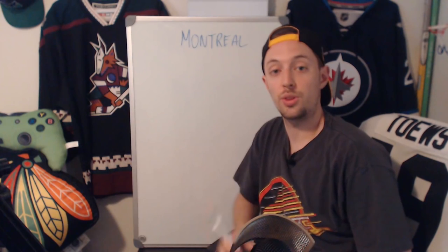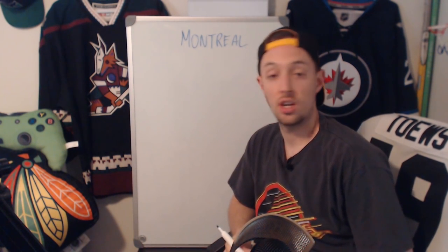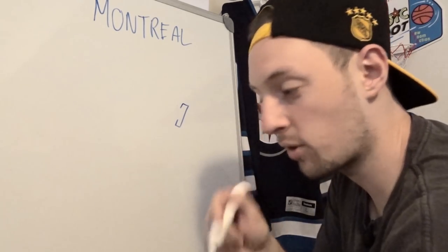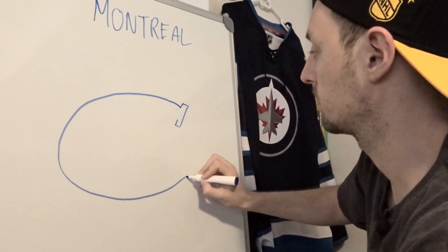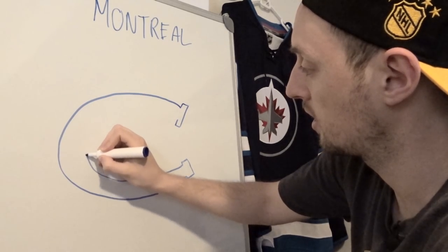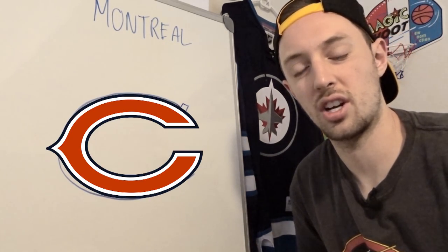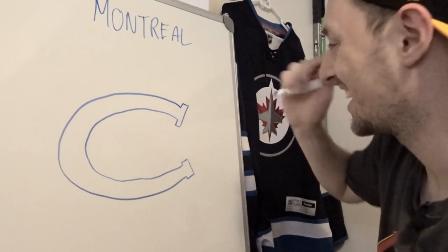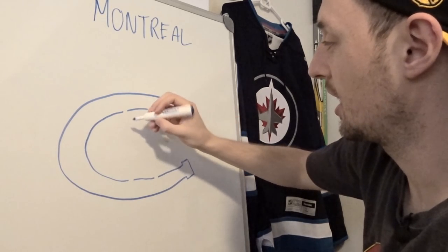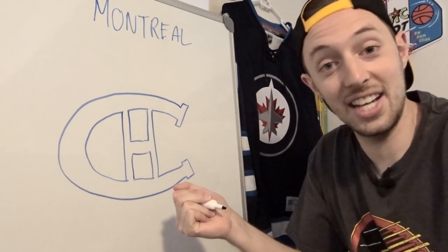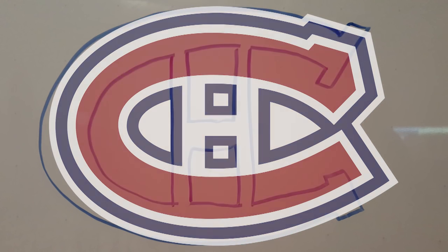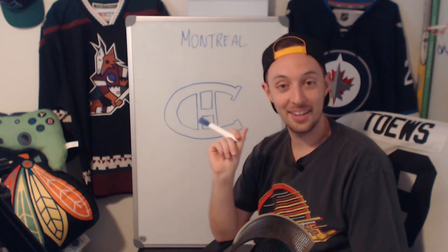Things only get worse from here. Let's go with the next Original Six team in the Atlantic Division — the Montreal Canadiens. This is probably one of the easier ones. We're not allowed to erase. I don't even know what these little accents are, but looking at it now this kind of looks more like the Chicago Bears logo. Oh no — it's going to be a huge H! I have to make these little notches for the H. That's actually solid — I'm proud of that. I'll give mine a solid seven.